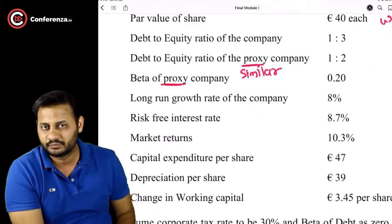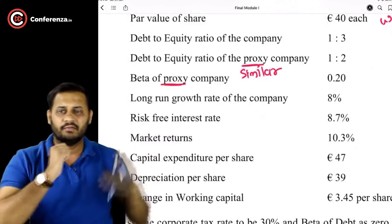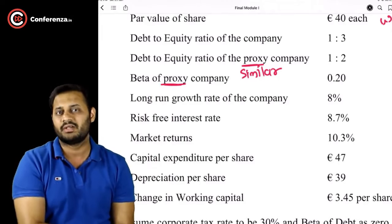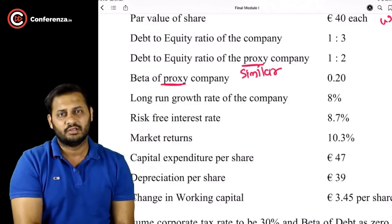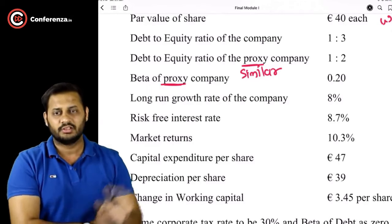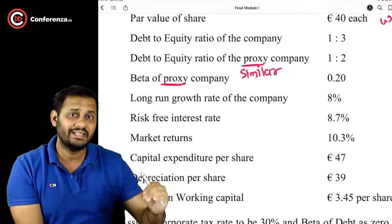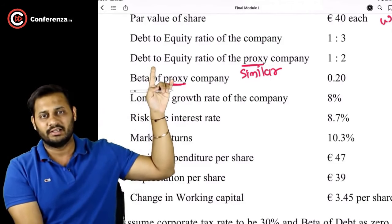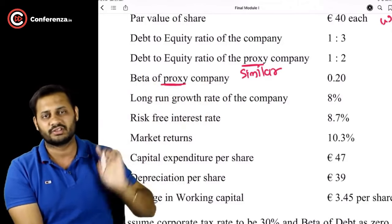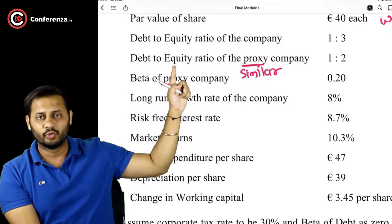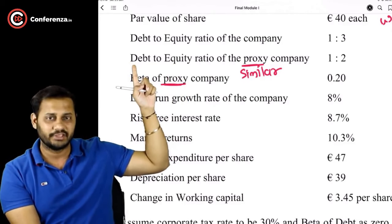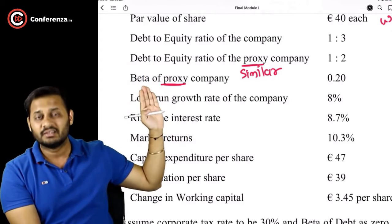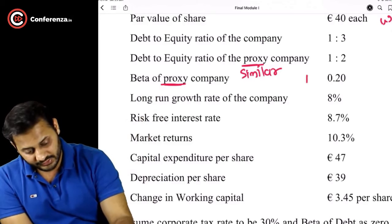The proxy company's beta is given — decide whether it is geared or ungeared. If the proxy company has both debt and equity in its capital structure, this will be a geared beta. If the proxy company has only equity capital, it will be an ungeared beta. Since the debt-equity ratio of the proxy company is 1:2, that means the proxy company has both debt and equity, so this beta is the geared beta — Beta(g).